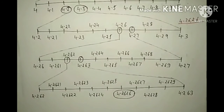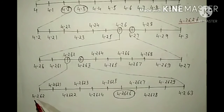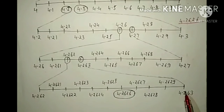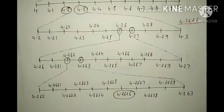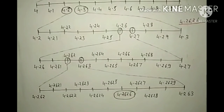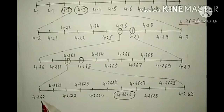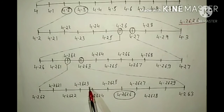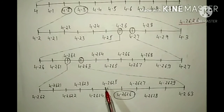So mark 4.262 and 4.263. Now make another number line. Write 4.262 in the left end and 4.263 in the right end. Now again we have to write the middle numbers between them. After 4.262 comes 4.2621, then 4.2622, then 4.2623, then 4.2624, then 4.2625.